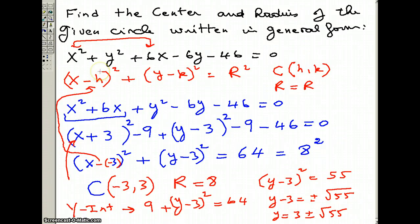Let's go over finding the center and the radius of this given equation written in general form. If you look at the equation x squared plus y squared plus 6x minus 6y minus 46, we cannot figure out what's the center and what's the radius. But if we change this equation to a standard form, something that looks like this, then h,k would be the center and r would be the radius.